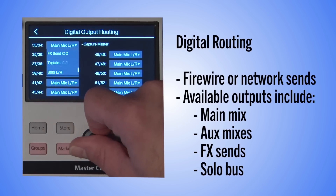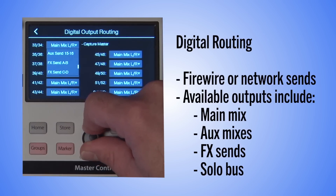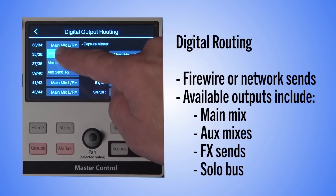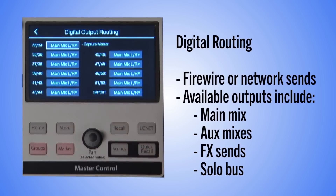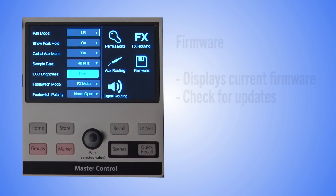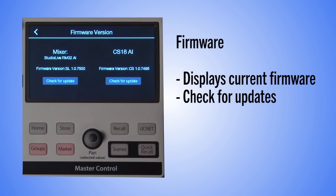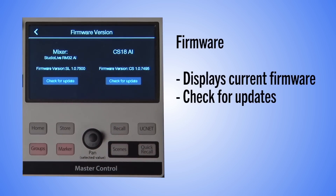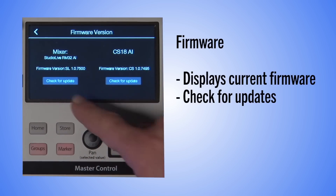Each digital output pair has a dropdown list of available outputs, including the main mix, Augs mixes, effects sends, and solo buss. Opening the firmware page will show the current firmware version for your CS18AI and the connected mixer. There is also an option to update the firmware for each.